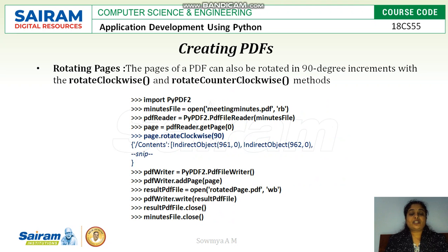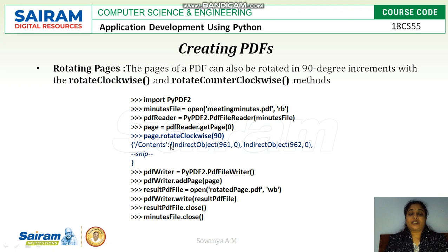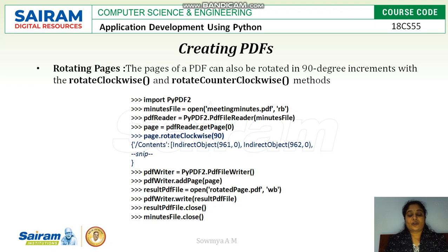Next is rotating pages. In a PDF, if you want to rotate a page clockwise or anticlockwise, we have two methods. rotateClockwise rotates the page 90 degrees clockwise, and rotateCounterClockwise rotates it anticlockwise. Once the PDF is opened with a reader object, get the page you want to rotate using getPage, then call page_object.rotateClockwise(90). The rotated document can be saved to a new PDF using the PDF writer.